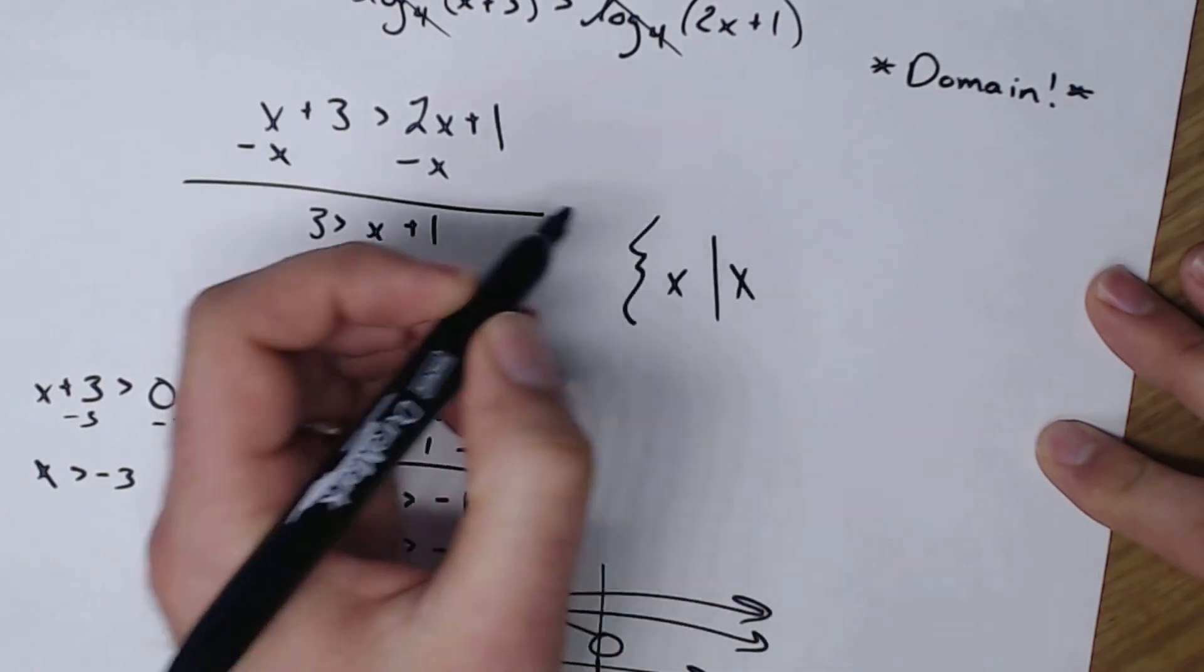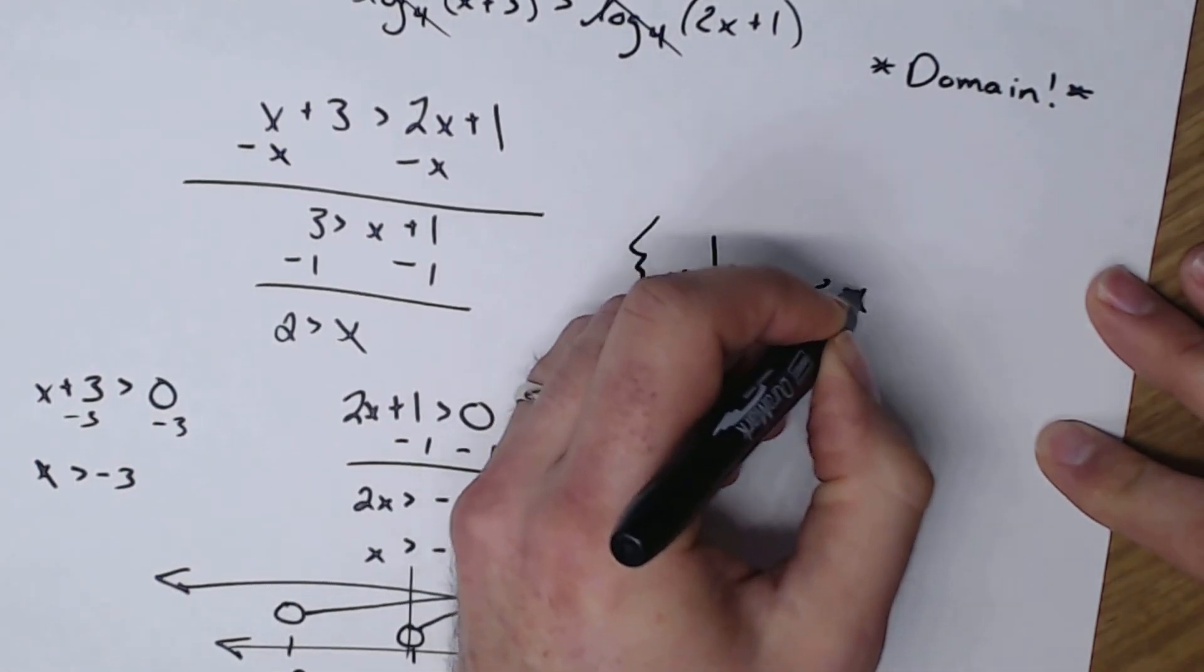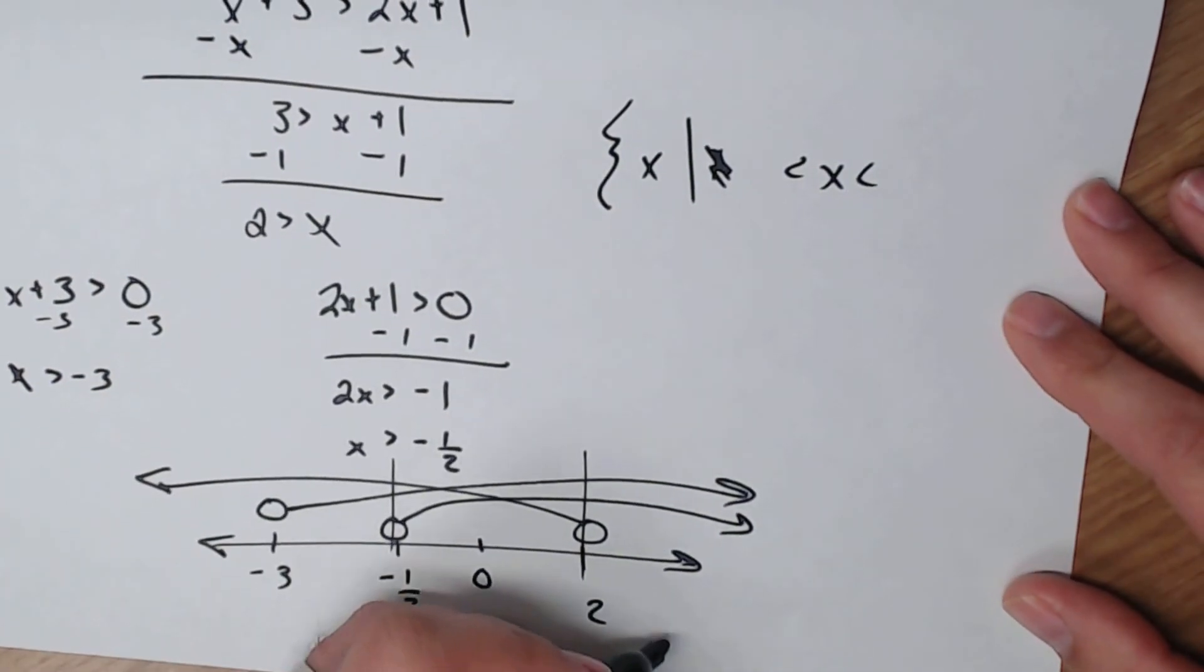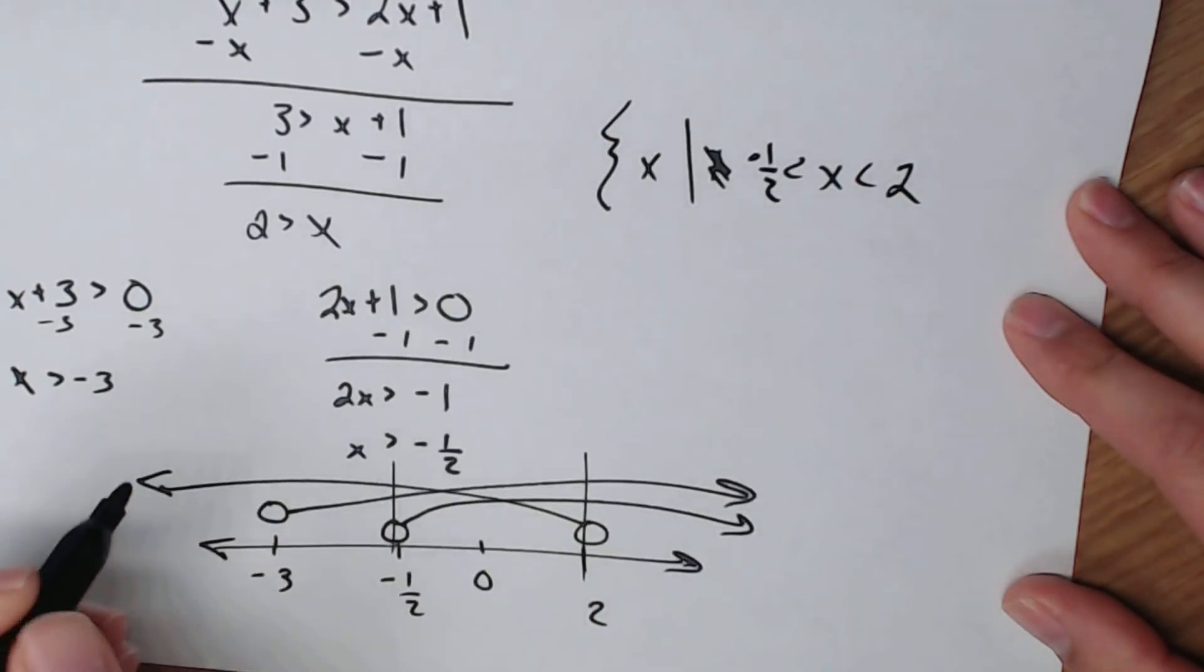So I'm an x such that x must be between negative one half and two.